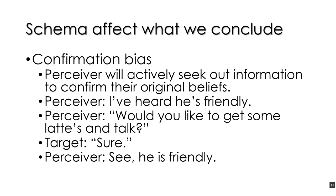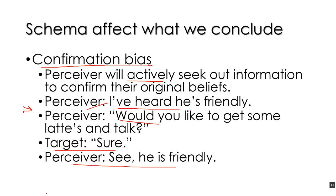Schemata also affect what we conclude — this is the confirmation bias. The confirmation bias is when perceivers actively seek out information to confirm their original beliefs. A perceiver begins with the belief that someone is friendly. They want to test it, so they ask: 'Would you like to go get some lattes and talk sometime?' The target says sure — and the perceiver says 'See, he is friendly!' But notice this is a biased, one-sided question.